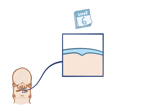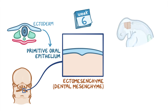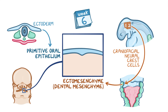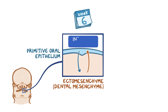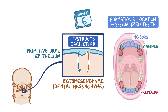Teeth are one of the most diverse organs in humans, both morphologically and functionally. The development of teeth begins around week 6 from two tissue components: the primitive oral epithelium derived from ectoderm, and the underlying ectomesenchyme or dental mesenchyme. The dental mesenchyme derives from craniofacial neural crest cells that migrate from the developing midbrain and the first two rhombomeres into the first branchial arch. The oral epithelium and the dental mesenchyme instruct each other in a sequential and reciprocal way to precisely determine the formation and location of highly specialized teeth such as incisors, canines, premolars and molars.